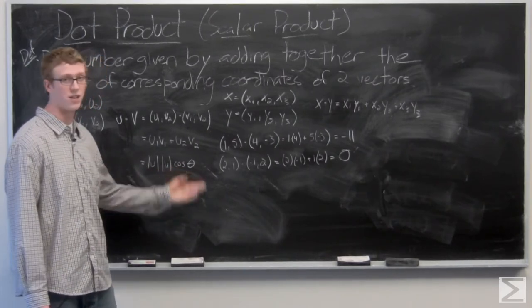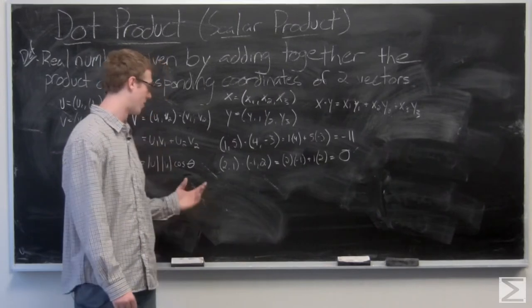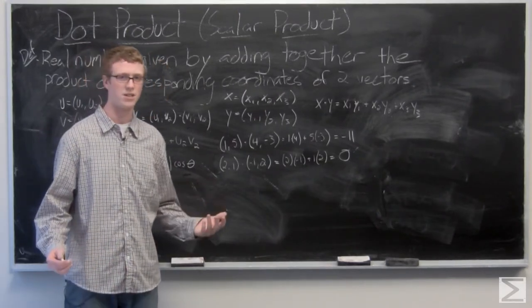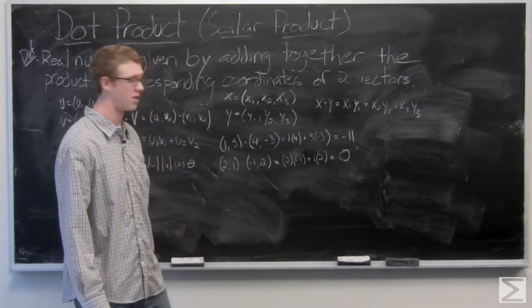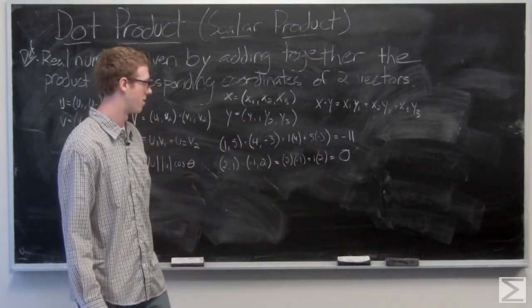So the cosine of theta must be zero. Well, cosine of theta, theta is 90 degrees, that's zero. Makes sense that it follows that the dot product of perpendicular vectors is going to be zero.